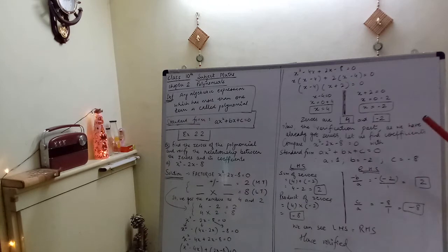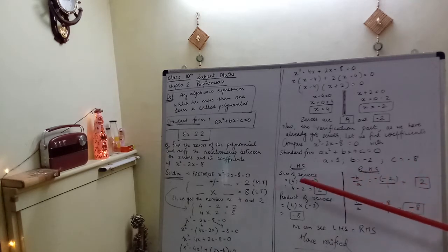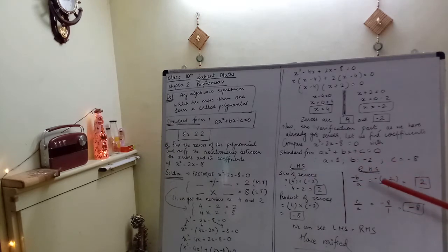Now let us verify the relationship. To verify the relationship means in maths, LHS should be equal to RHS. What is LHS? Left hand side. Right hand side is RHS. If both are equal, then it is verified. So first we have to do for verification, LHS, sum of zeros, should equal minus b upon a.